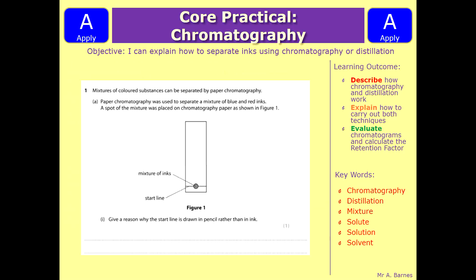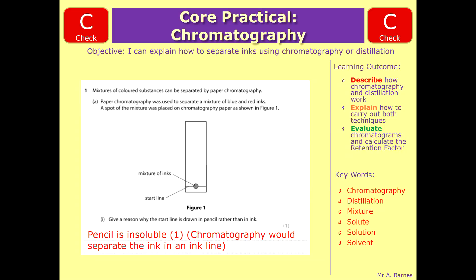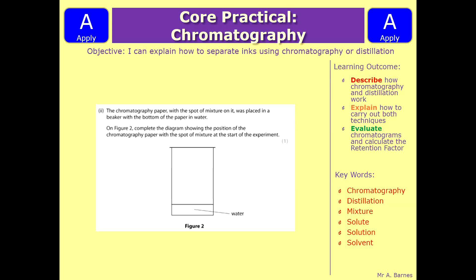Let's have a look at some example questions. We've got a chromatogram and it says mixtures of coloured substances can be separated by paper chromatography. Paper chromatography was used to separate a mixture of blue and red inks. A spot of the mixture was placed on chromatography paper as shown in figure 1. Give a reason why the start line is drawn in pencil rather than ink. If you've been paying attention you should know that pencil is insoluble — that gives you the mark — and if you can add that chromatography would separate the ink in an ink line, that would be even better.